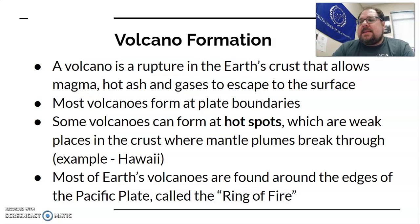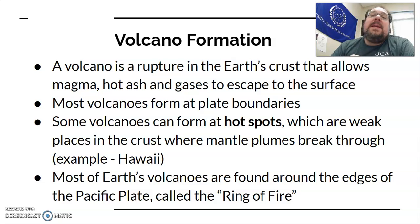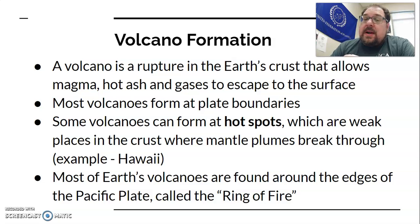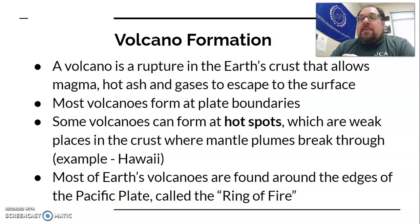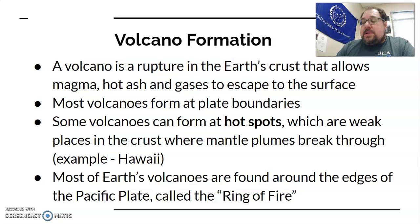Hot spots involve mantle plumes — hot spots in the mantle that plume up through the crust and form volcanoes. The majority of the earth's volcanoes are found around the edges of the Pacific plate, in an area called the Ring of Fire. That includes the northwestern United States, Canada, Alaska, Japan, the Philippines, Indonesia, and around that way. There are also volcanoes in the Mediterranean — places like Vesuvius and Santorini — because of plate interactions there.